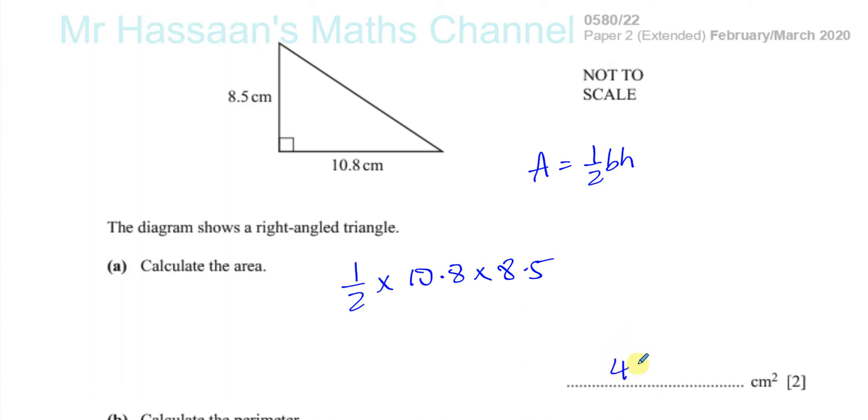So you have 45.9 centimeters squared. That's an exact answer. It's exactly, you know, stops there, so that's fine. And there we have the answer to part A.